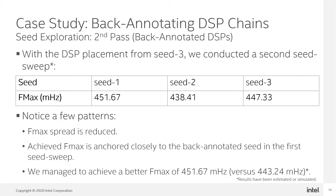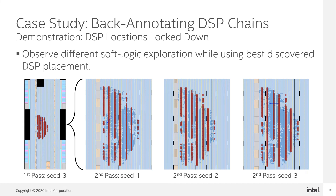Finally, by exploring similar solutions, we managed to achieve a slightly better fmax than what was achieved in the first sweep. To conclude our case study, we used the chip planner to see that different soft logic placement and routing was explored, all while preserving the best discovered DSP placement from the first pass seed sweep.